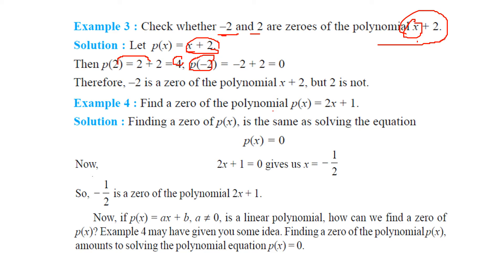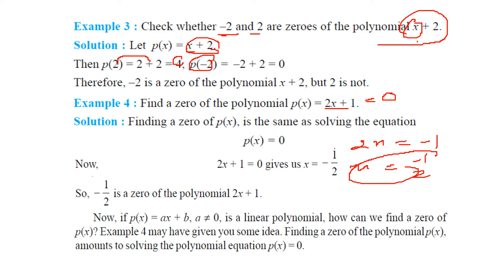Find the zero of the polynomial 2x plus 1. So how to find out? Just put it equal to 0. Then 2x will be equal to minus 1, and x will be equal to minus half. So x equal to minus half is the zero of this polynomial.